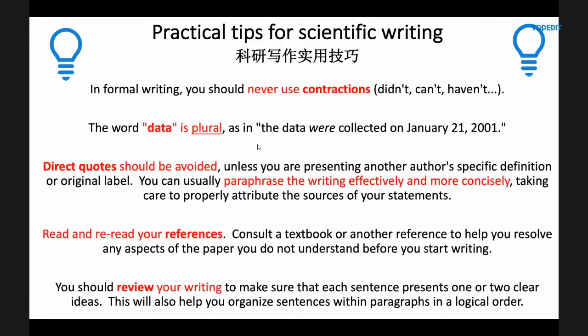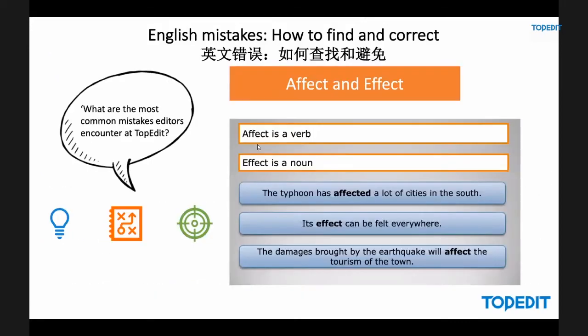It's so important to always properly attribute the sources of all your statements. Don't get caught out inadvertently plagiarizing the work of other colleagues. If in doubt, cite, and give us your articles so we can check them for plagiarism before you submit to those international journals. The journal will run the article through Authenticate, Turnitin, Plagshare, or one of the many software packages available to check for academic plagiarism. You want to make sure you are totally bulletproof before you submit. Don't forget to read and reread your references.